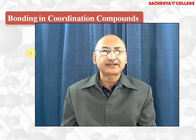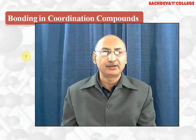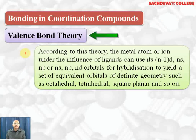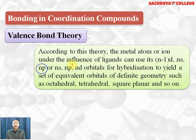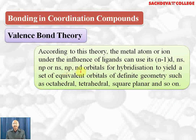Let's take up bonding in complex or coordination compounds. First, we are taking Valence Bond Theory. According to this theory, the metal atom or ion under the influence of ligands can use (n-1)d, ns, np or ns, np, nd orbitals for hybridization. When it uses (n-1)d, ns, and np orbitals, we call it an inner orbital complex. When it uses ns, np, and nd orbitals, we call it an outer orbital complex.